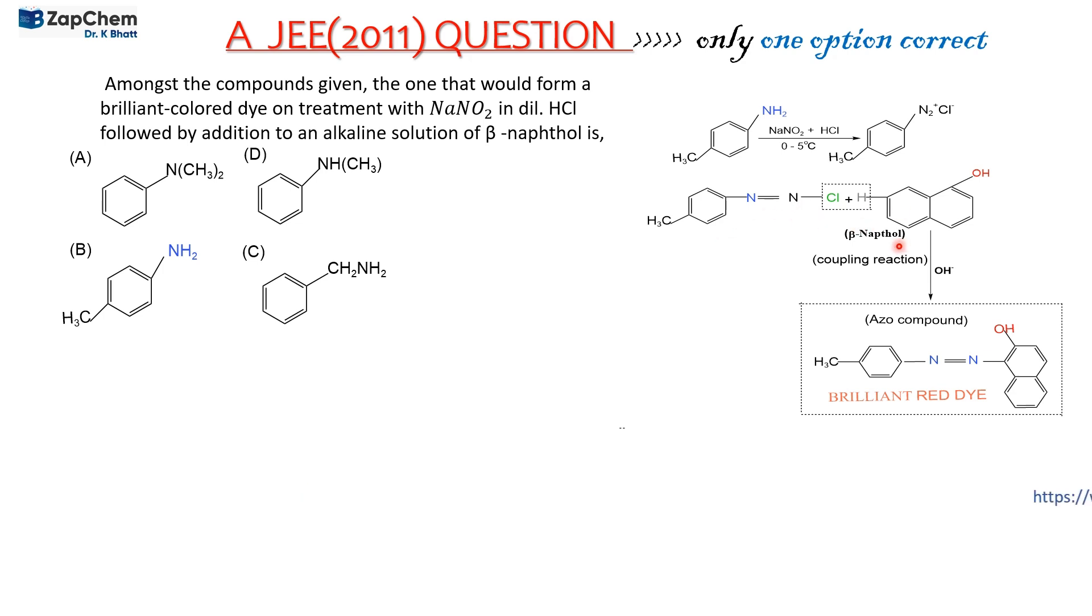Finally, when it is treated with β-naphthol in alkaline conditions, you can see that the OH group becomes more active. Therefore, a molecule of HCl is separated, and here finally...